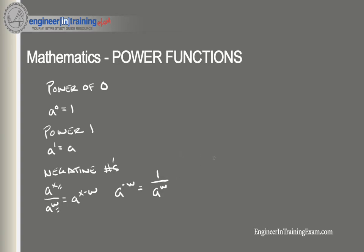To illustrate this, take a squared divided by a to the third. Expanding gives a times a in the numerator and a times a times a in the denominator. Common terms cancel, leaving one a in the numerator canceled, so we get 1 over a — which is equivalent to a raised to the negative one.